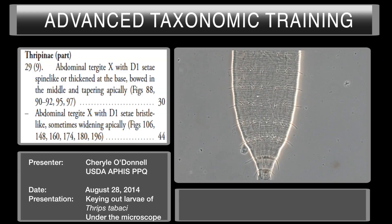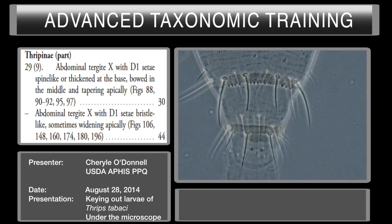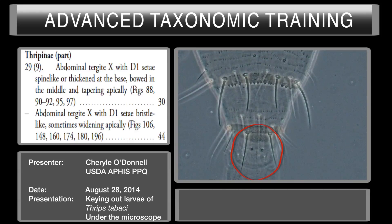Couplet 29 is on page 119. The first part asks about abdominal tergite ten — focusing on tergite ten right here — and whether the D1 CD are spine-like or thickened at the base. The alternative is whether they are bristle-like. The D1 CD on this specimen are bristle-like, as shown in figures 106, 148, 160, 174, 180, and 196.